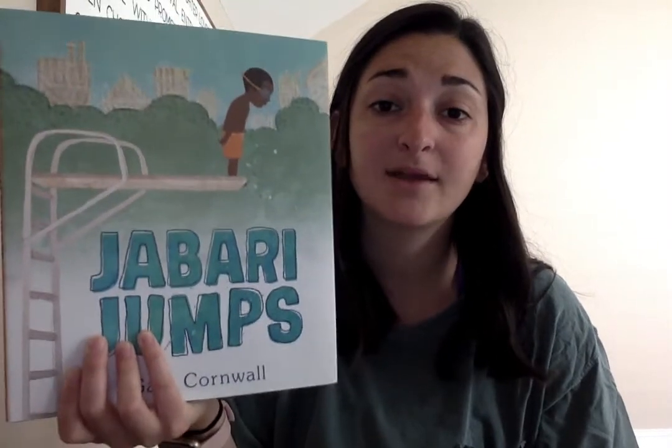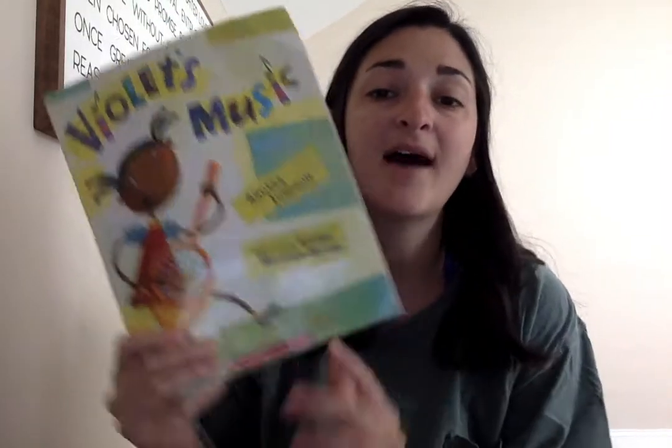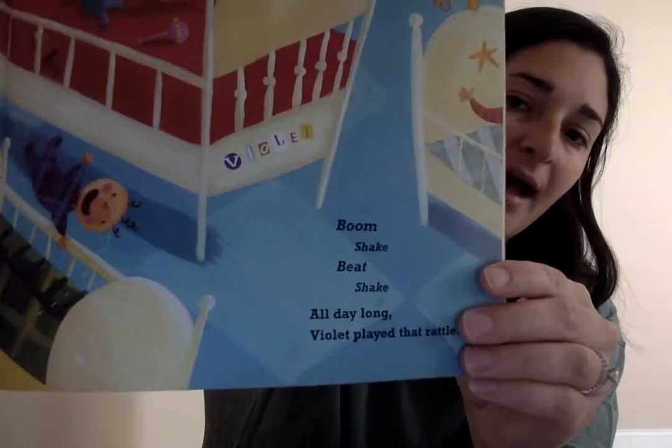I'm going to be looking at it for 'Violet's Music' today, and then you are going to use 'Jabari Jumps' and find what the author did in that story and why. So looking at 'Violet's Music,' one thing that really stood out to me was that every time Violet had an instrument, the author put music sounds — it said 'boom shake beat shake' when she had her rattle.